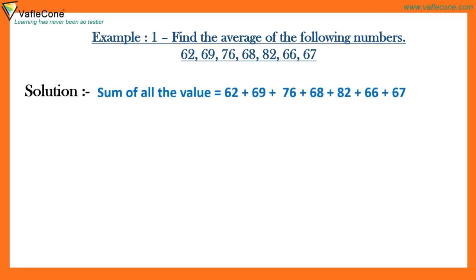Sum of all the values equals 62 plus 69 plus 76 plus 68 plus 82 plus 66 plus 67, which equals 490. Total number of values is equal to 7.